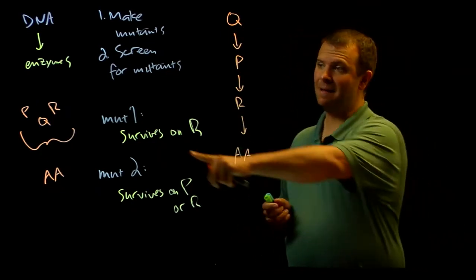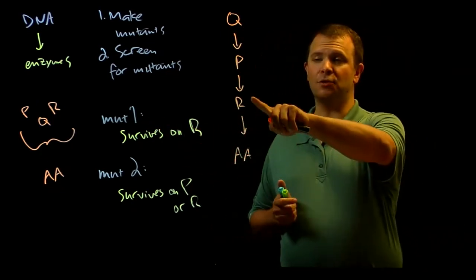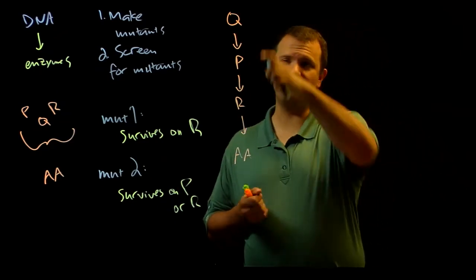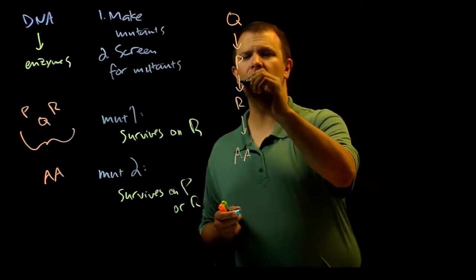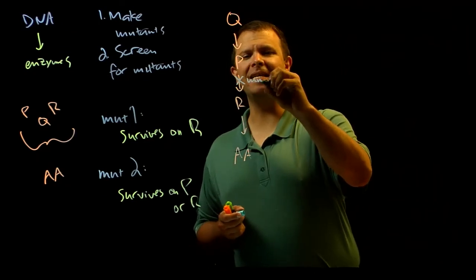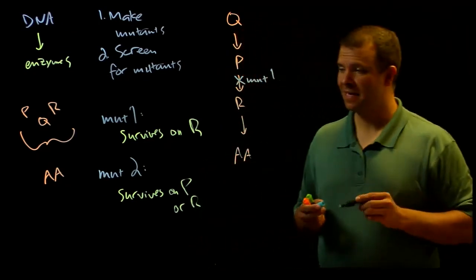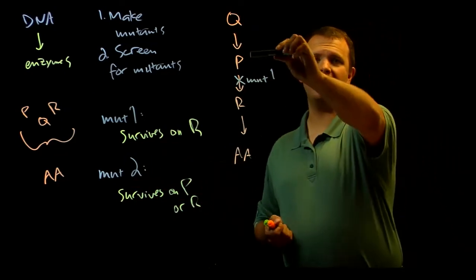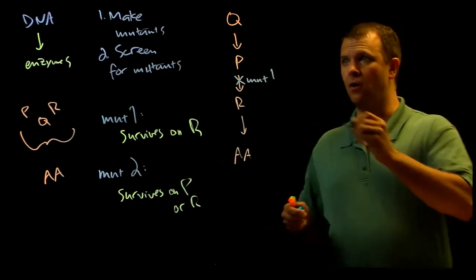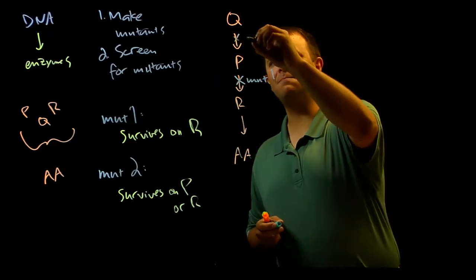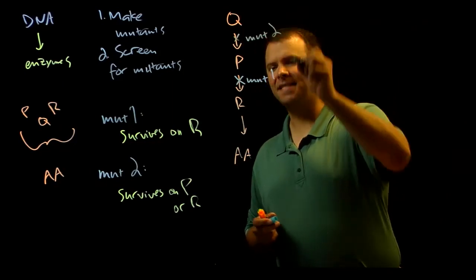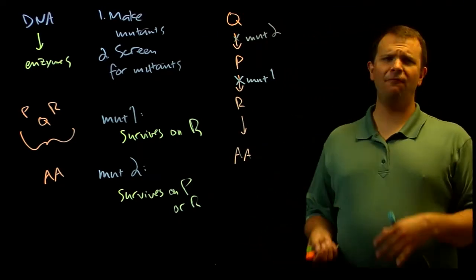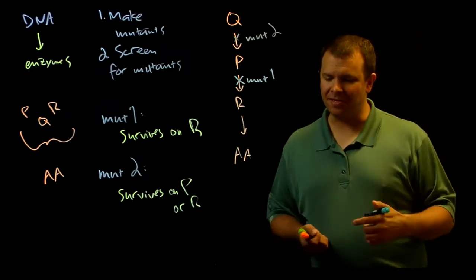I know that mutant one, because it survives if I feed it R but doesn't survive if I feed it P or Q, must be busted here. Similarly, because mutant two survives if I feed it P or R, mutant two must be busted in this step here.